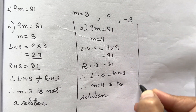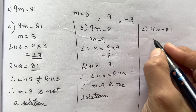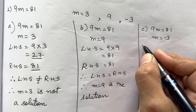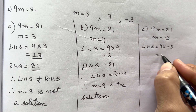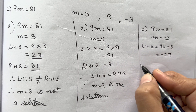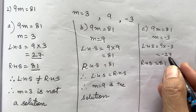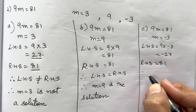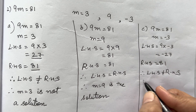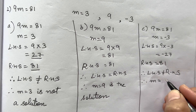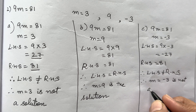Next, same equation 9m = 81 with m = -3. Left Hand Side is 9 × (-3) = -27. Right Hand Side is 81. Both answers are different, so Left Hand Side is not equal to Right Hand Side. Therefore m = -3 is not a solution.